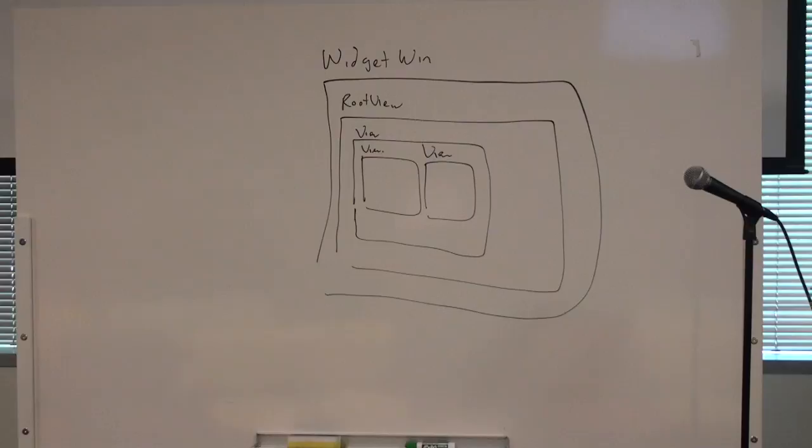The root view is a subclass of view that figures out how to propagate events and all that. Within the root view, there is basically the view hierarchy. For the Chrome browser window, there is a fairly deep hierarchy of views, starting with the frame of the window all the way down to individual buttons on the toolbar. Dialogue boxes end up with the same thing.